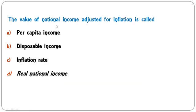The value of national income adjusted for inflation is called: per capita income, disposable income, inflation rate, or real national income? When you adjust any value for inflation, you get the real value. So if the value of national income is adjusted for inflation, it will be real national income. D is the correct answer.